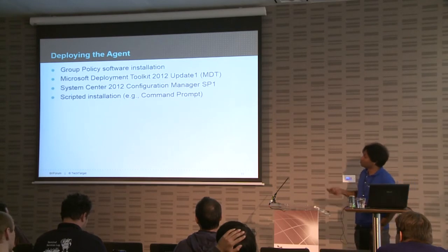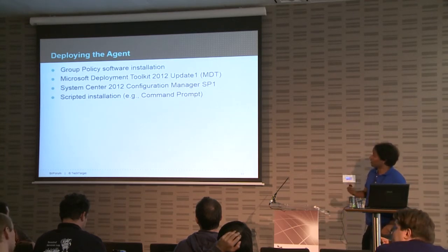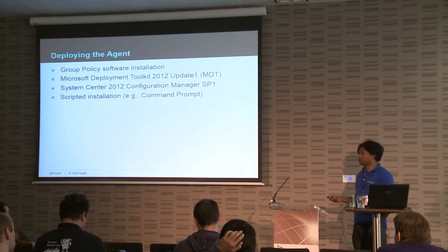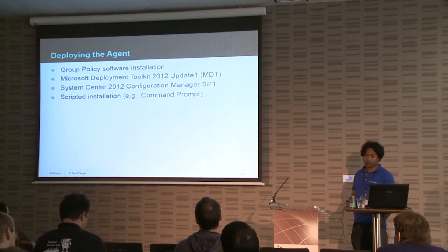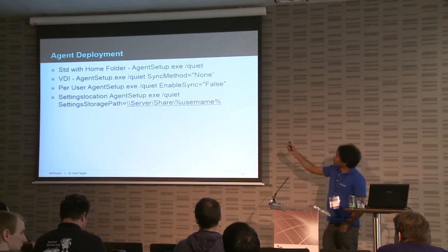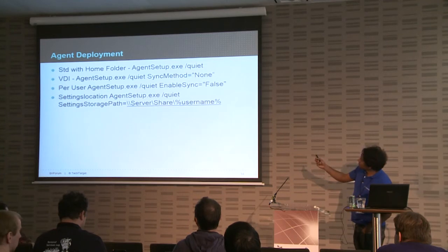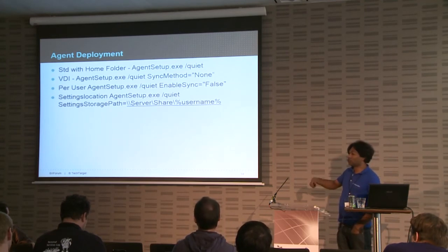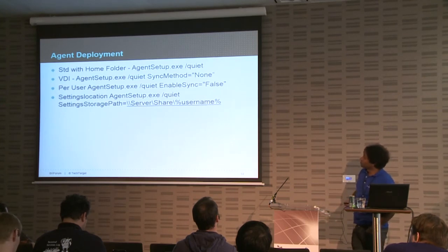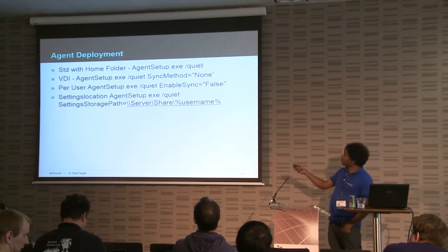Deploying the agent — you use group policy or whatever system you have in place, whether MDT or some other deployment mechanism, or System Center. You can use scripted installation. Looking at the different agent deployment switches: silent install, enable sync per user. For VDI where you don't want the agent to use offline files, you specify sync method 'none' because you're always persistently connected to the servers. And specify the settings location during setup — setting storage path, server share, username.